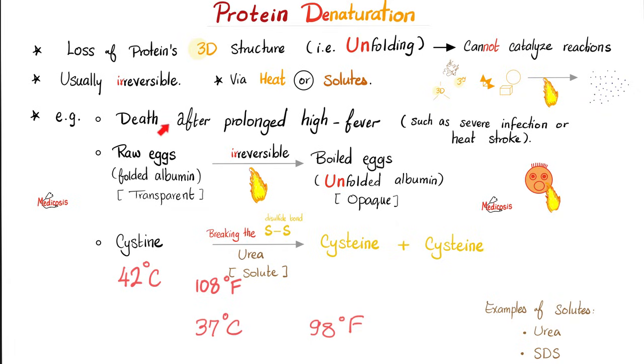Do you have another example? Sure. Raw eggs have folded albumin, which is transparent. If you heat them, i.e. boil them and cook them, the albumin will be unfolded, hashtag denatured, and will become opaque. And this is irreversible. You cannot go back to the transparent albumin, no matter how many YouTube hacks you watch. It's irreversible, baby. You cannot go back.